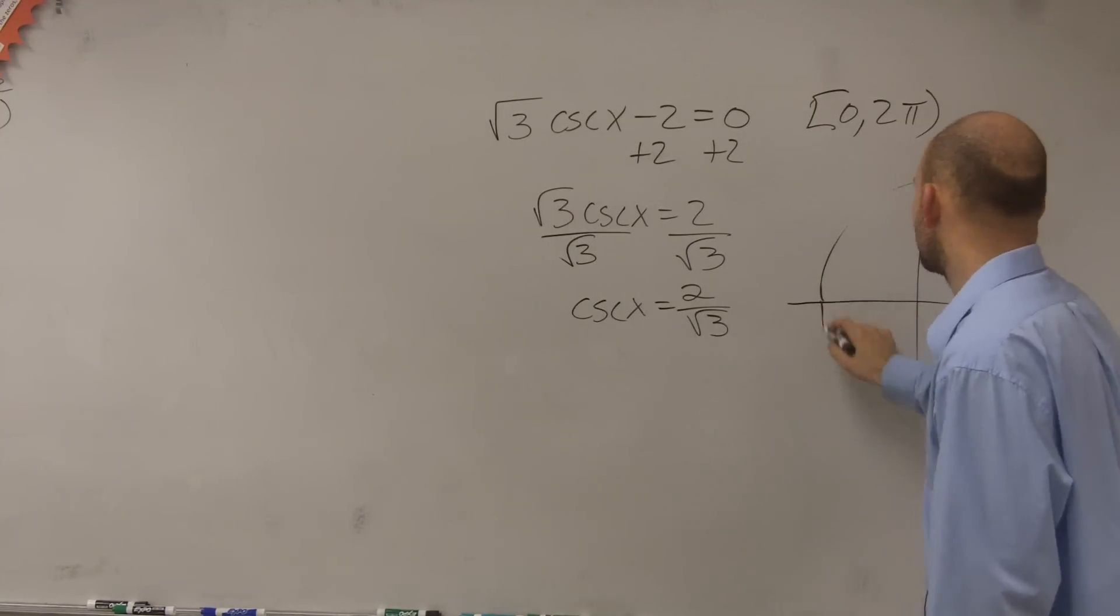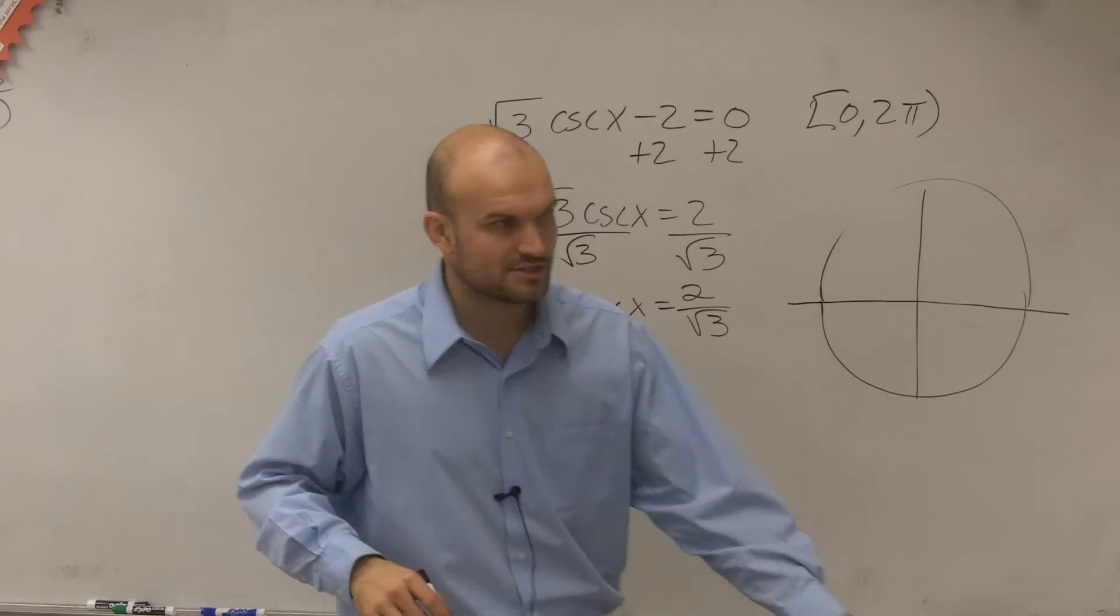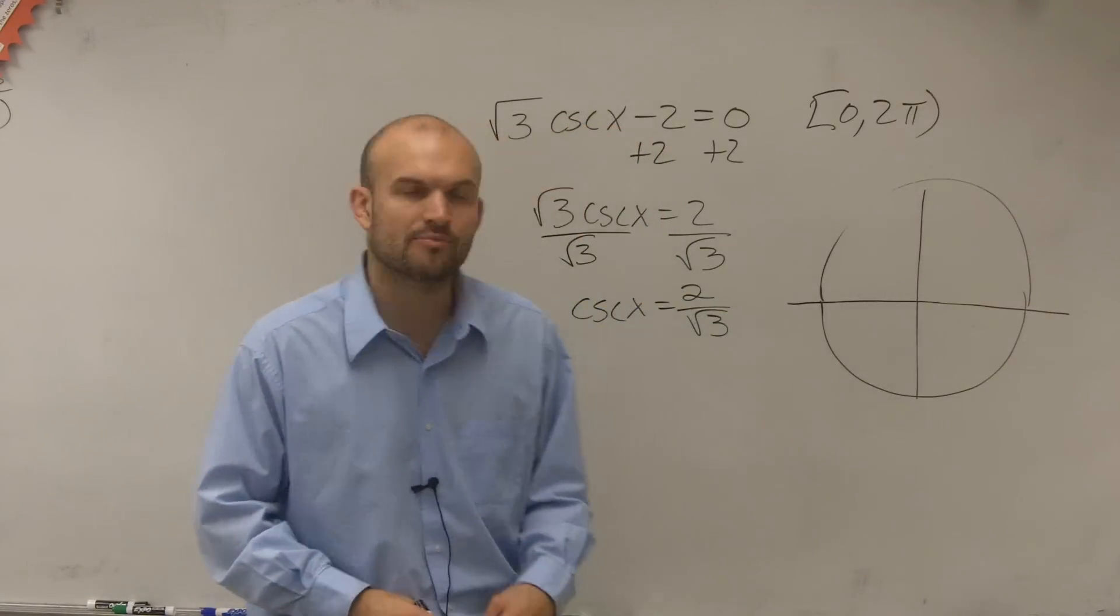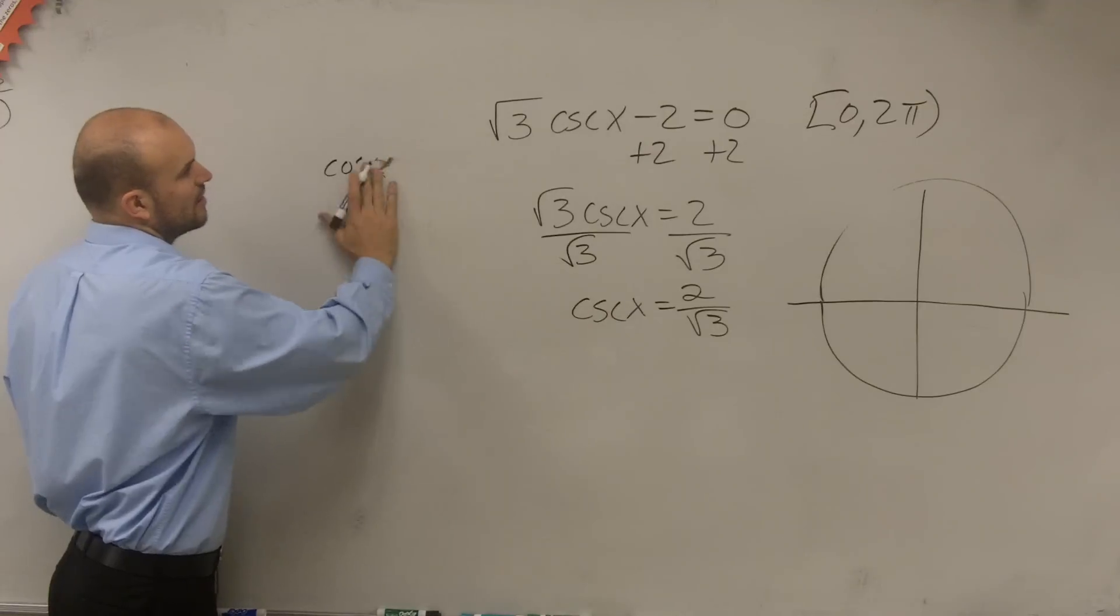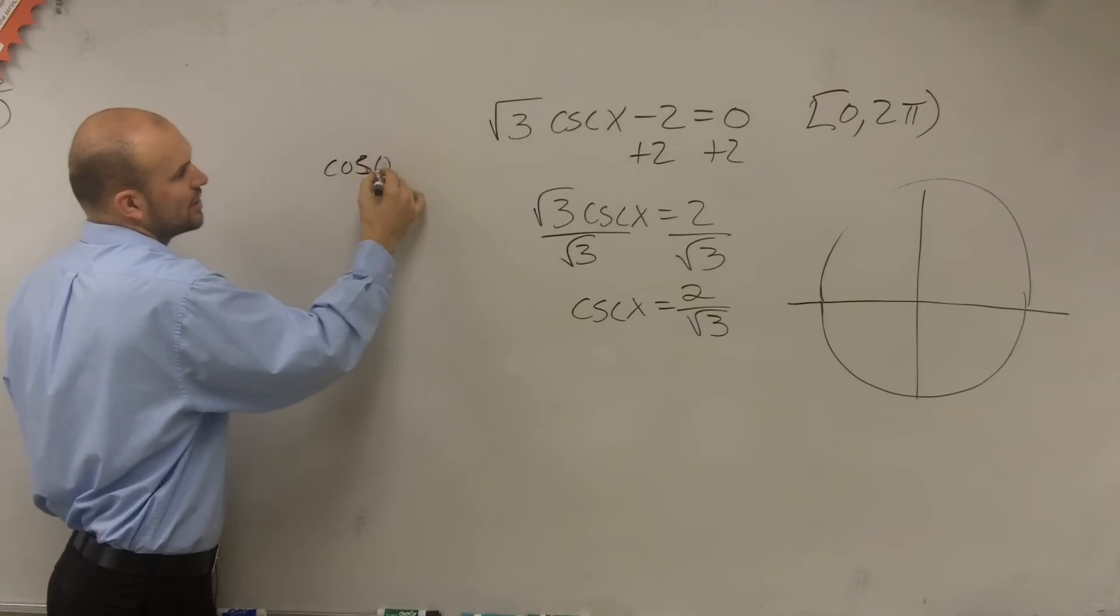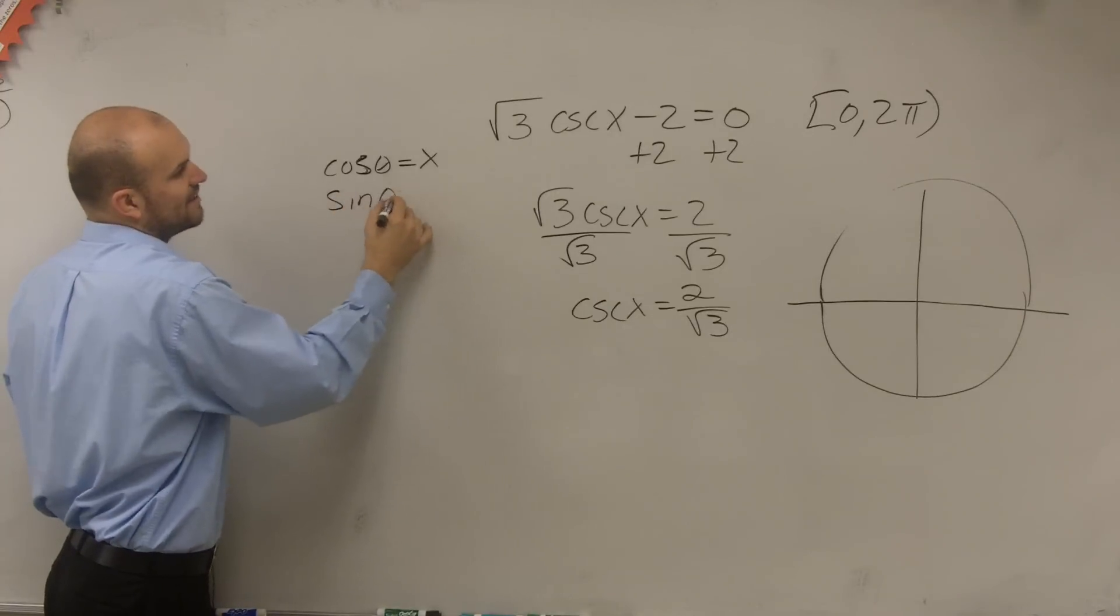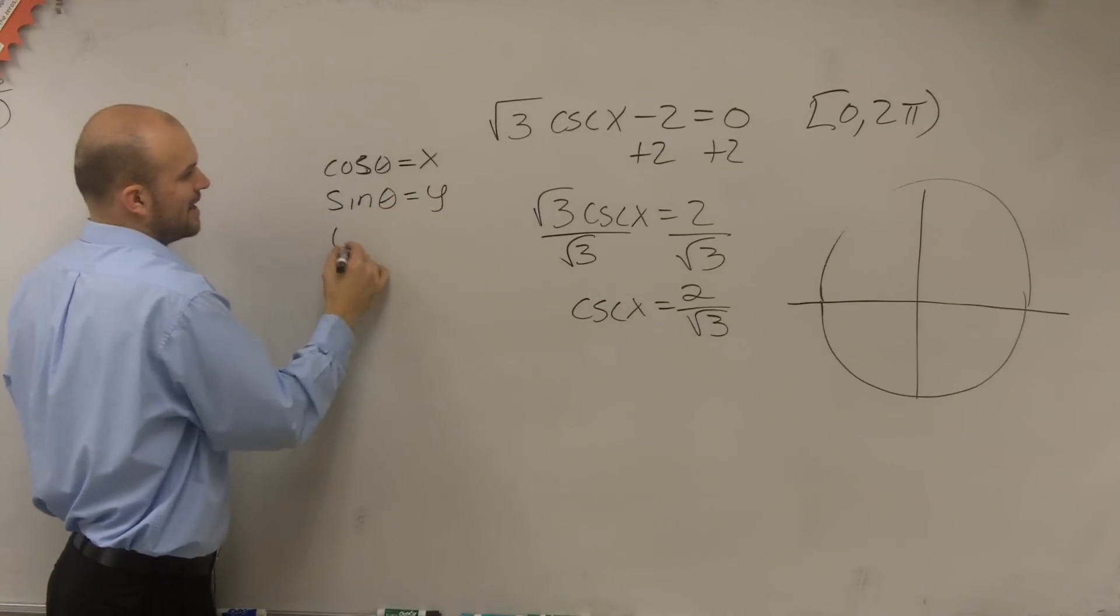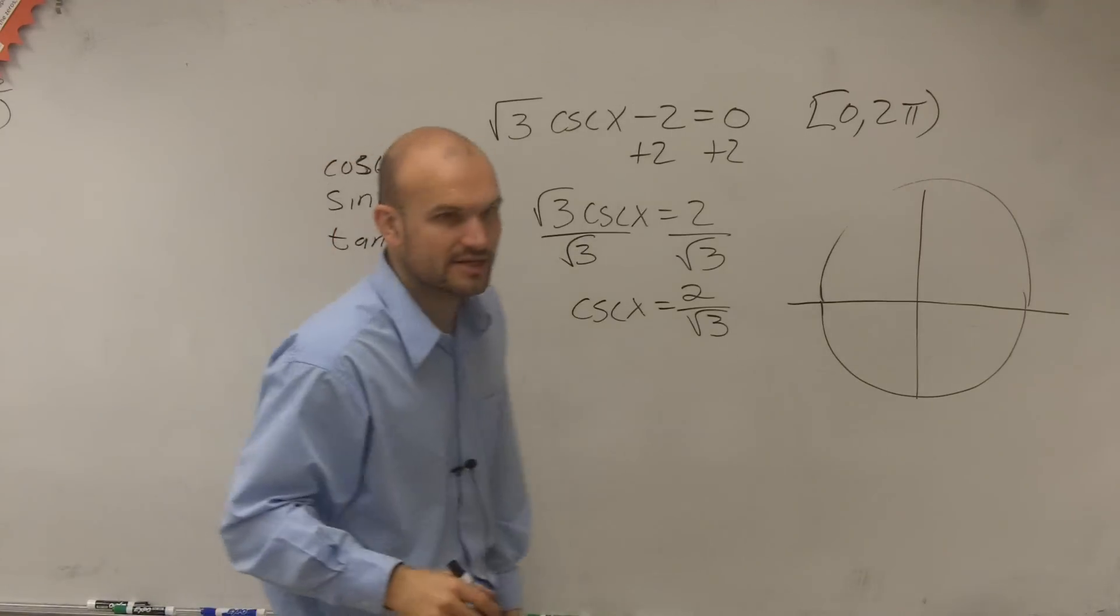And remember, we're going to want to evaluate this by using the coordinate points on the unit circle. And ladies and gentlemen, we talked about finding the coordinate points on the unit circle. We said that the cosine of any angle on the unit circle is going to represent the x coordinate of that point. The sine of that angle equals y.